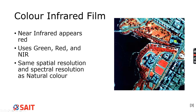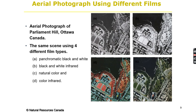In terms of spatial resolution, color infrared is exactly the same as natural color. Sometimes it can be slightly worse just because of the near infrared wavelength — it's a longer wavelength, so there's more of a trade-off. The spectral resolution is the same because we have three bands to work with.